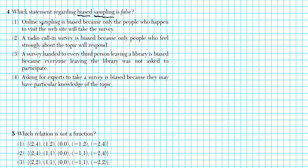The first statement says online sampling is biased because only people who happen to visit the website will take the survey. Is that accurate? Yes — only people who browse the web will be able to gain access to the online sampling. You can see the connection: website, online, biased. This is a true statement.